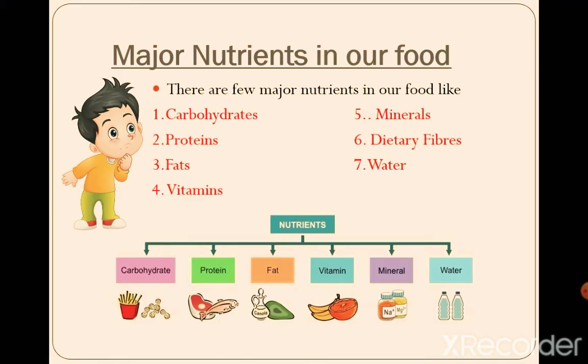Let's recall what the major nutrients in our food are. The first nutrient is carbohydrates, second proteins, third fats, fourth vitamins, fifth minerals, and sixth and seventh are dietary fibers and water.